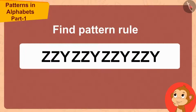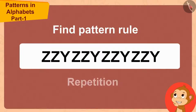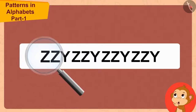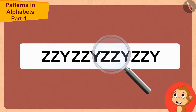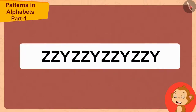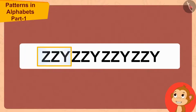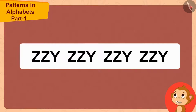Such patterns which are made using letters are called patterns in alphabets. Let us see whether Babban was able to recognize the rule of this pattern. 'First, I try to find some sort of repetition in it. Z, Z, Y — Z, Z, Y — Z, Z, Y. Here, Z, Z, Y is repeating in a three-letter group over and over again. I found the rule of this pattern!'